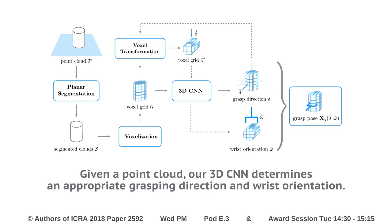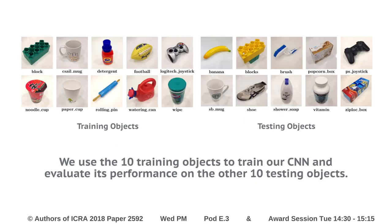The chosen grasping direction and wrist orientation finally determine the orientation of the grasping pose. We use 10 different training objects to train our 3D CNN model and evaluate performance on the other 10 testing objects.